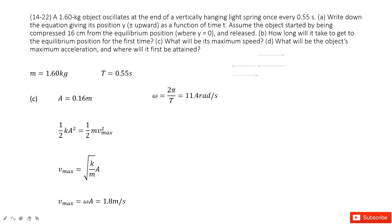The next part asks for the maximum speed. For simple harmonic motion, mechanical energy is conserved. Initially, the spring is compressed — that's elastic potential energy. When the object reaches the balanced position, the total energy is converted to kinetic energy.